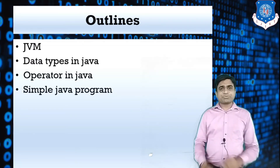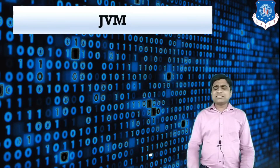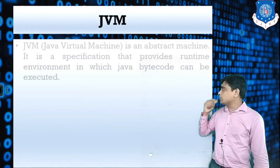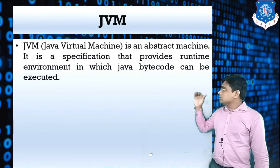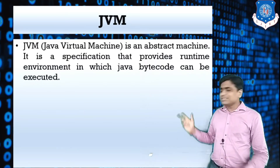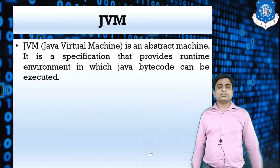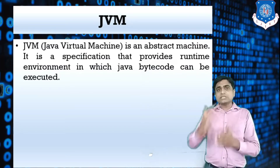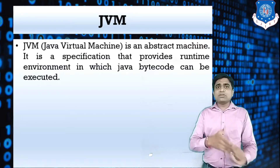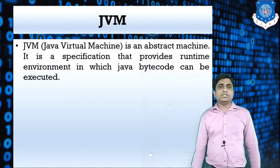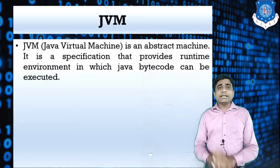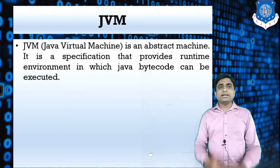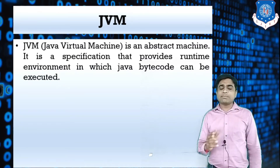Now let's start with JVM, our first topic. What do you mean by JVM? It is nothing but the Java Virtual Machine. The JVM is an abstract machine — it is a specification that provides the runtime environment in which Java bytecode can be executed.